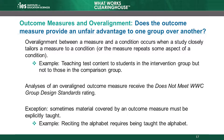Returning to the WWC's overall requirements for outcome measures, the third requirement is that they must avoid overalignment with the intervention or comparison group. Overalignment occurs when a study closely tailors a measure to a condition, or the measure repeats some aspects of a condition. If a study closely aligns or tailors outcome measures to the intervention, the study findings may not accurately indicate the effect of the intervention.